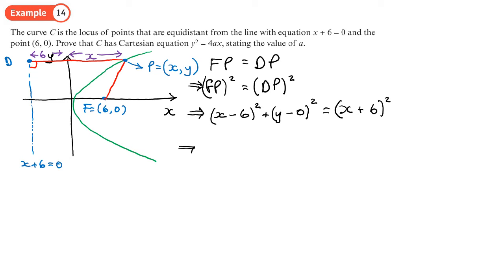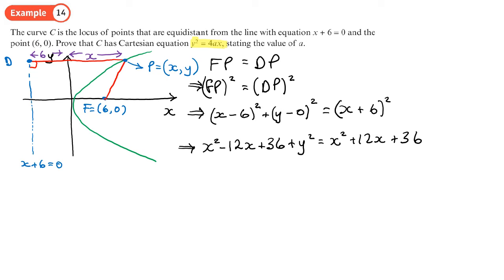Expanding the left side: x squared minus 12x plus 36 plus y squared. The right side expands to x squared plus 12x plus 36. Taking away x squared and 36 from both sides leaves y squared minus 12x equals 12x.